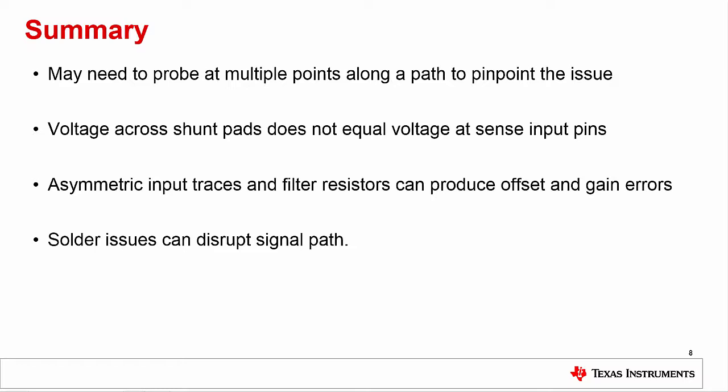Additionally, as current shunt monitors have input bias currents and due to their sense inputs not being buffered, resistances between the shunt and input pins will influence the offset and gain error of the device.